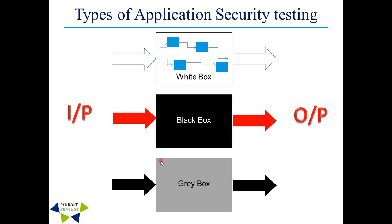The third type is gray box testing, which offers the combined benefits of both black box and white box wherever possible. Gray box security testers do not rely on the source code; instead, they rely on the interface definition and functional specifications. Based on the limited information available, a gray box tester can design excellent test scenarios, especially around interfaces. An example would be a Facebook application where you have login credentials and access to inner modules — you can test the login page and inner modules as well. This is one of the most popular kinds of security testing in terms of cost and coverage.